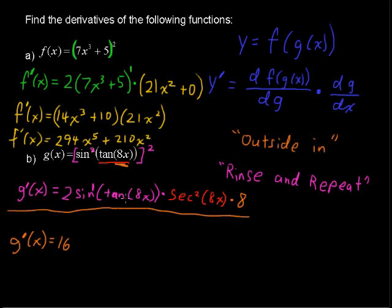16. Now notice that this tangent is not being multiplied by the secant squared. It is not being multiplied. It is the sine of the tangent of 8x. So 16 times sine of tangent 8x.